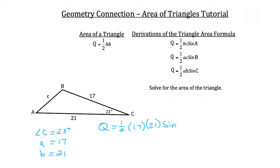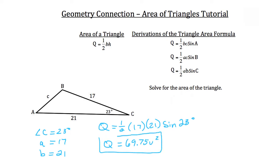So Q is equal to — if you run all that through your calculator — you get a total area of 69.75 units squared. This really isn't too complex of a change on the traditional triangle area formula.